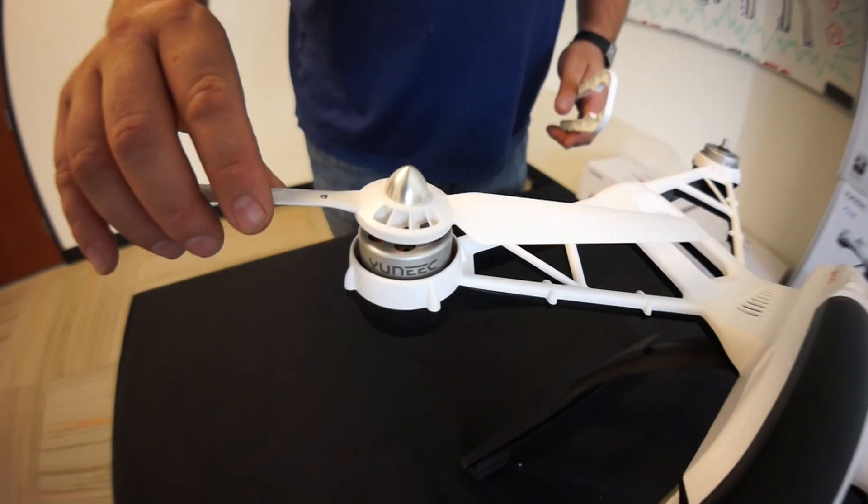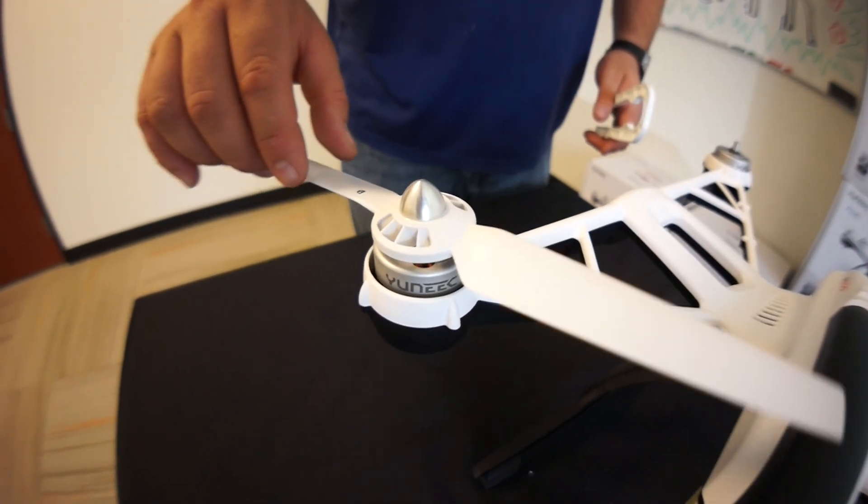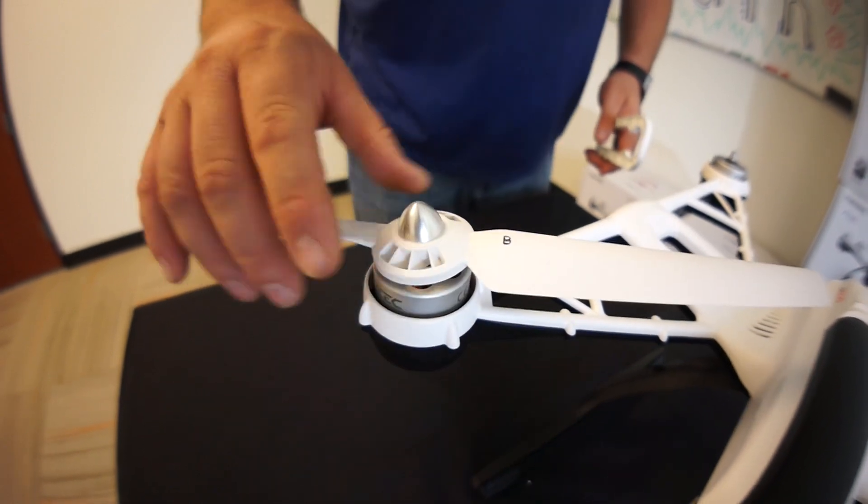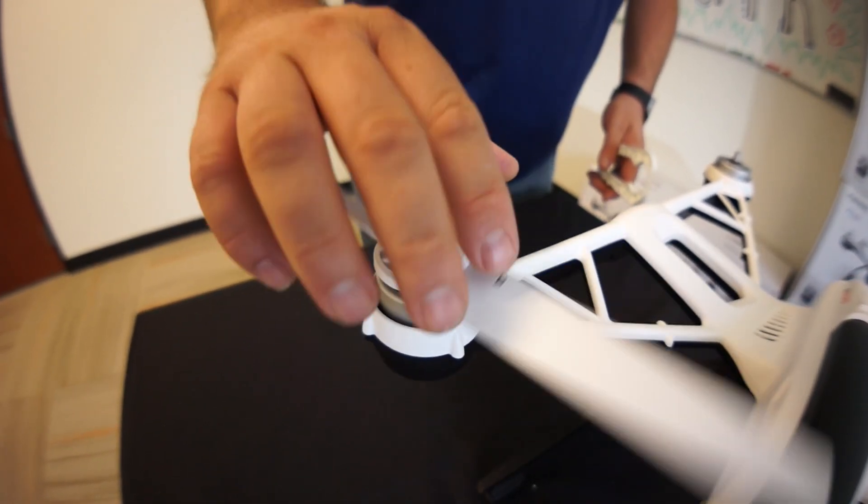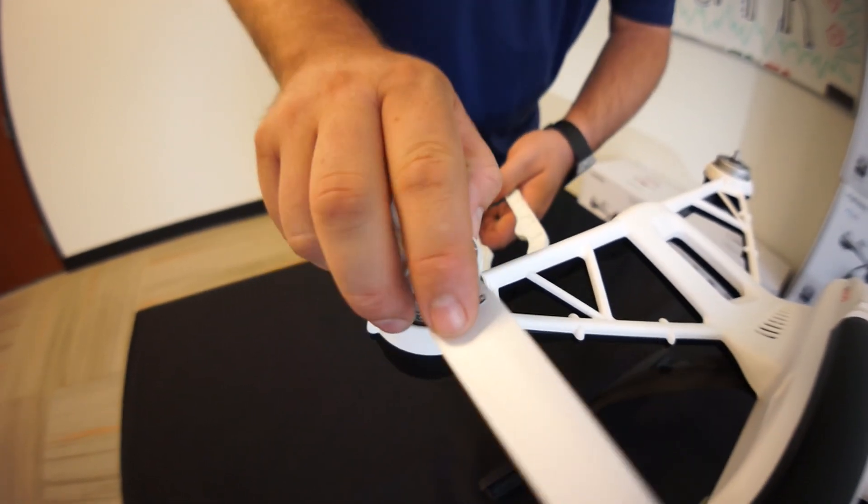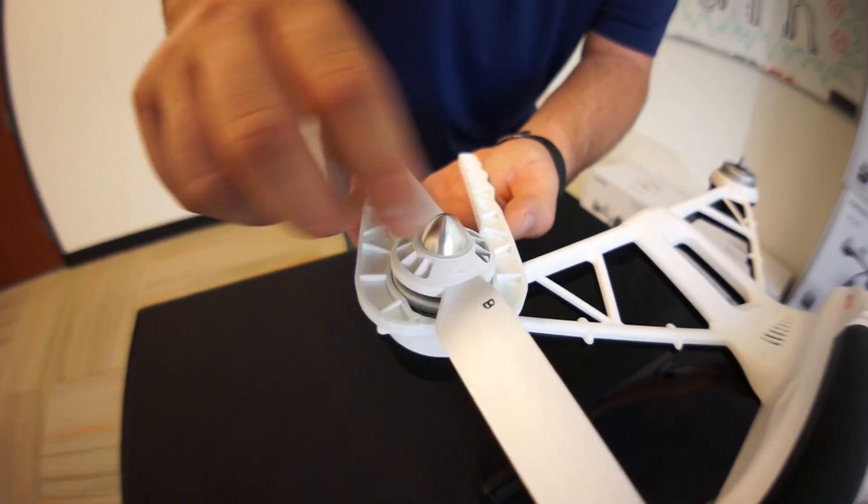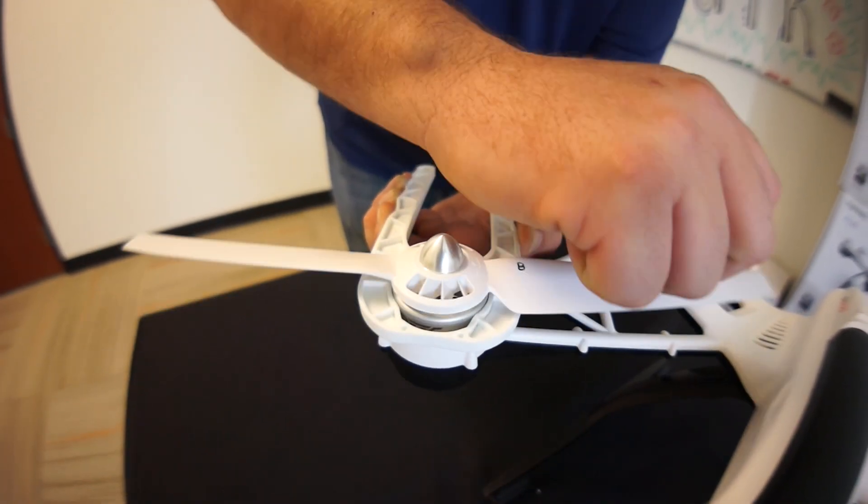We're going to go ahead and repeat this process for B. Just know B spins in the opposite direction. So we'll go ahead and put that on, spin it on until it stops. Grab our tool and finish the installation.